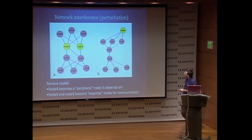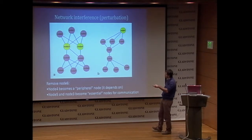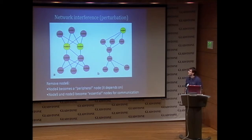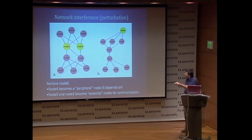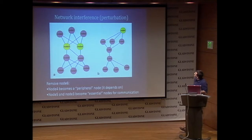Here is an example. Node 4 and node 3 are important nodes because they connect the top and the bottom of the network — they have high betweenness. If you remove node 6, then node 4 becomes a peripheral node, so its betweenness decreases. Maybe node 6 is an inhibitor or the gene is deleted. And you see that removing node 6, node 5 and node 3 become essential — they increase their importance in the network. So there is a sort of dependency: node 4 depends on node 6.